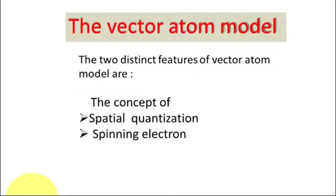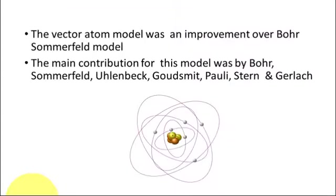These drawbacks were overcome to some extent by Sommerfeld, who introduced elliptical orbits. An improvement over Bohr and Sommerfeld was the vector atom model, which applies quantum theory. The two main distinct features of the vector atom model are spatial quantization and the spinning electron, which are very important and could account for the fine structure of the spectral lines due to the concept of the spinning electron brought by Uhlenbeck and Goudsmit.